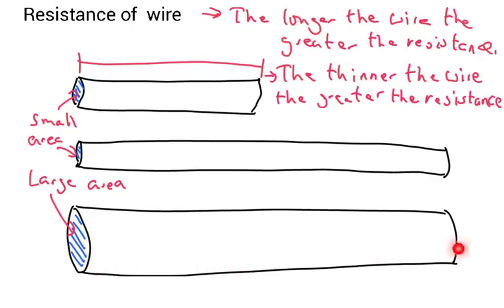With the larger area, there's more room for the electrons to flow, whereas here with the smaller area, it's as if they're being forced to go down like a single dirt track road. Whereas here there's a nice big long highway, it's easier to get...